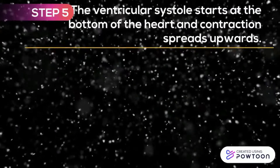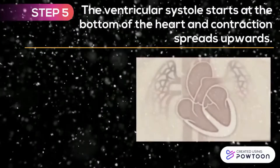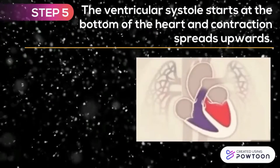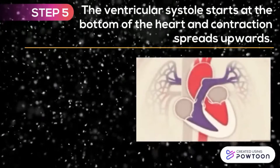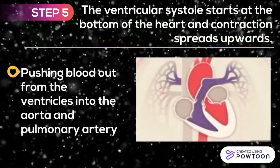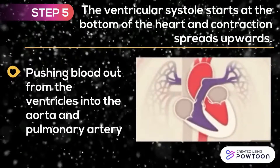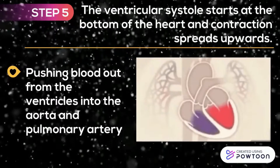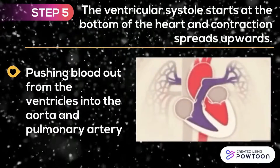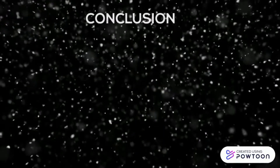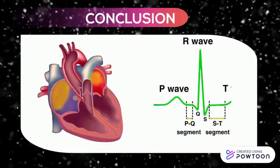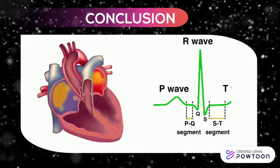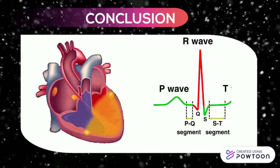Step 5: Ventricular systole starts at the bottom of the heart and contraction spreads upwards, pushing blood out from the ventricles into the aorta and pulmonary artery. In conclusion, heartbeat can be monitored using an electrocardiograph.